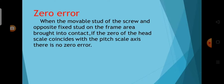Zero error: when the movable stud of the screw and the opposite fixed stud on the frame are brought into contact, if the zero of the head scale coincides with the pitch scale axis, there is no zero error.